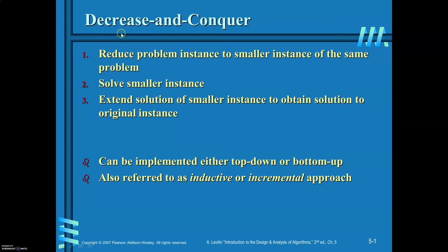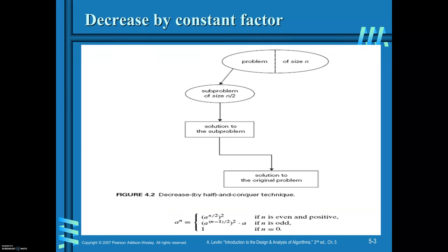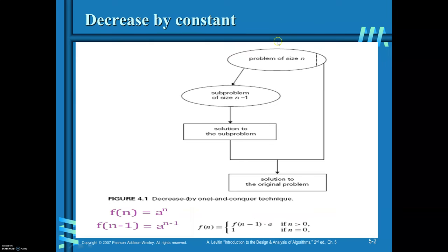Now we will see how you can decrease the problem. The problem can be decreased by three ways. The first one is decrease by constant, and the second one is decrease by constant factor, and the third is variable size decrease. Let me explain what decrease by constant means. You are given a problem of size n. Then reduce the problem to the smaller instance of size n-1. Find the solution to the sub-problem, then extend this solution to get the solution for the original problem.